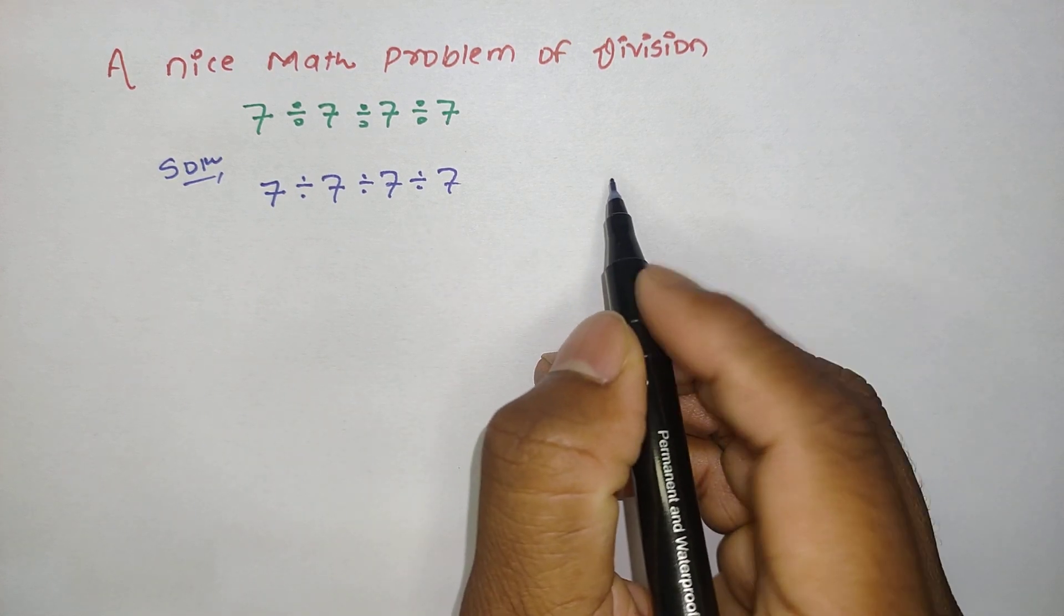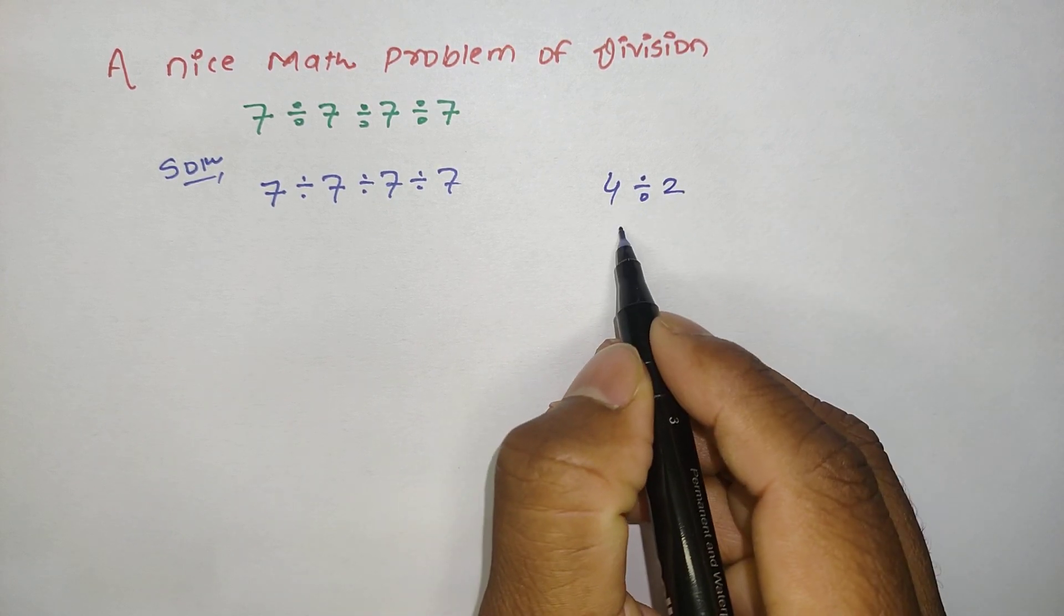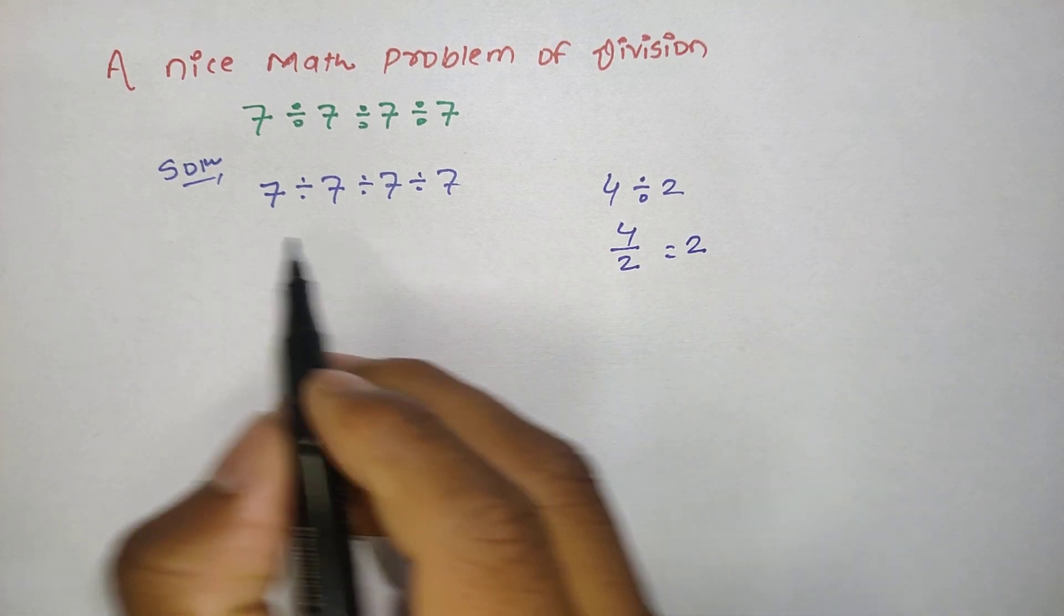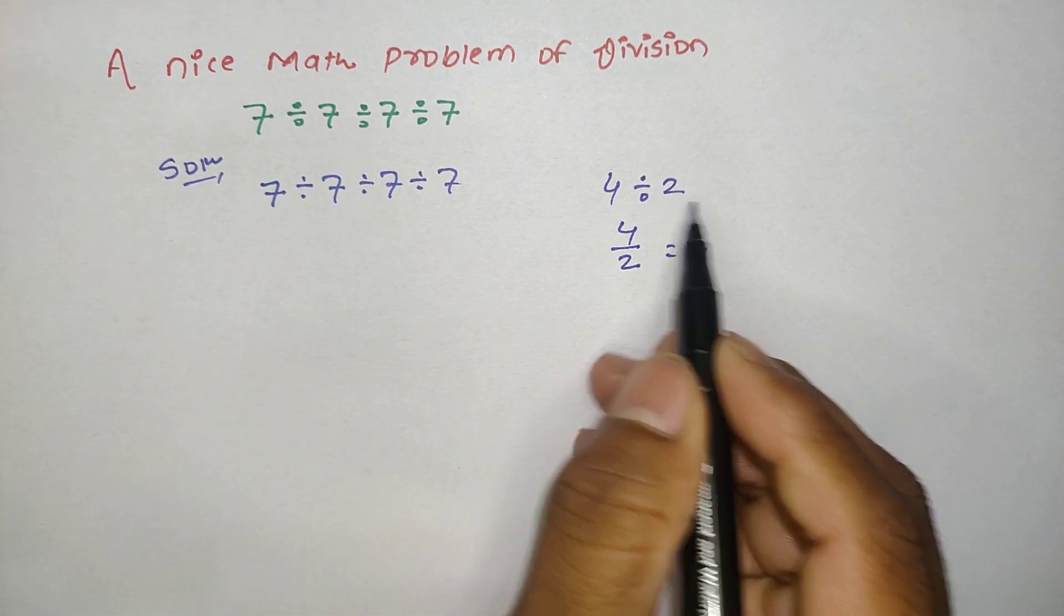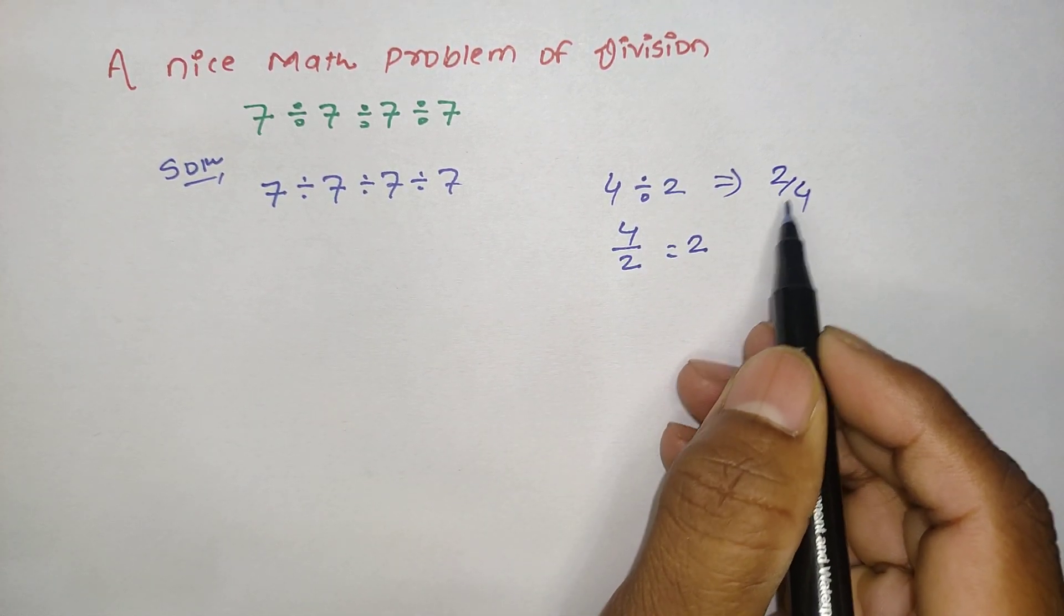If I give you an example: if I write 4 divided by 2, we can say that this is 4 divided by 2 that equals 2, right? So it means that we have to move from the left hand side.